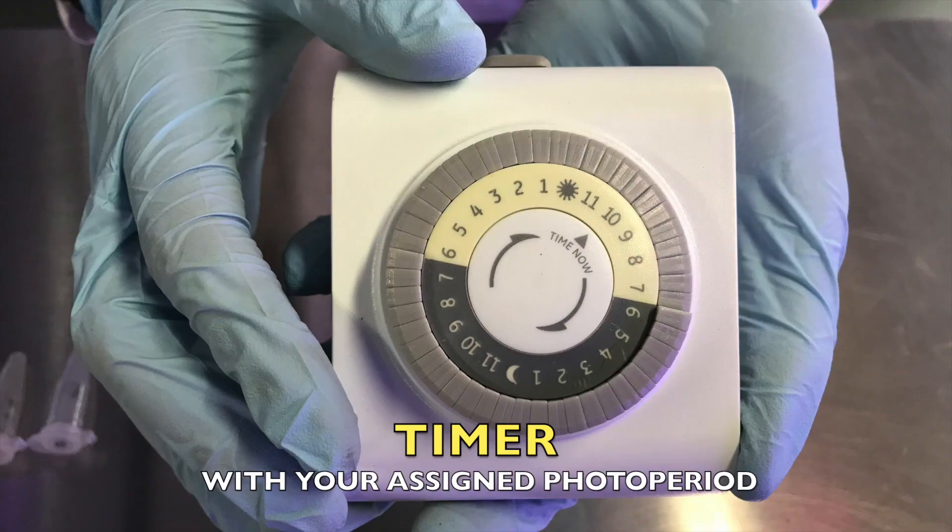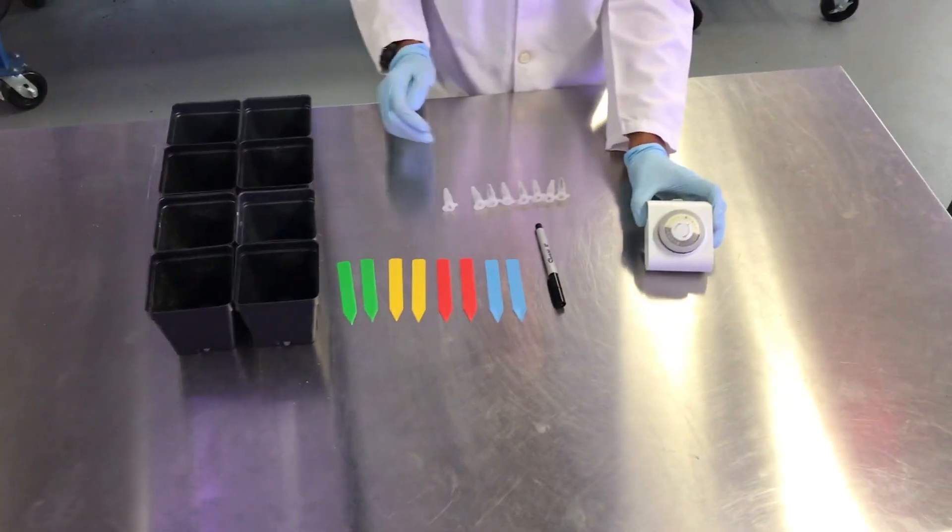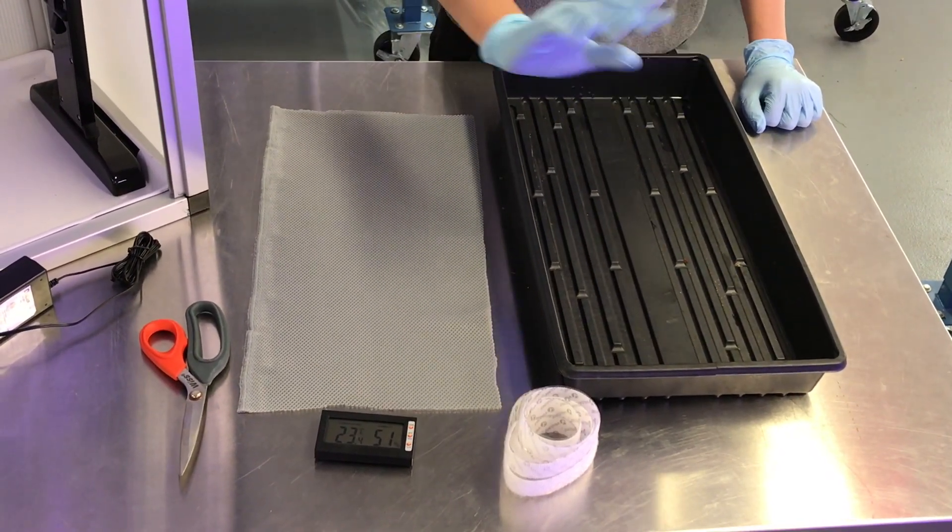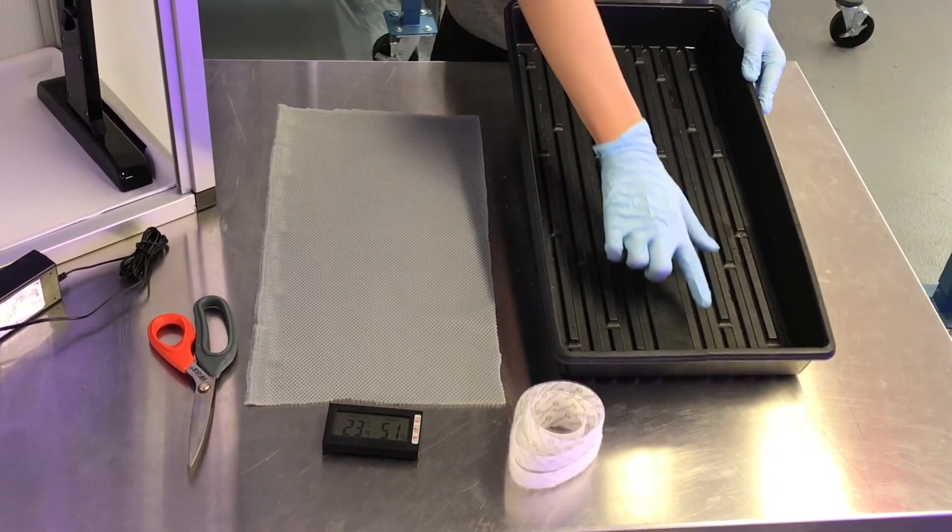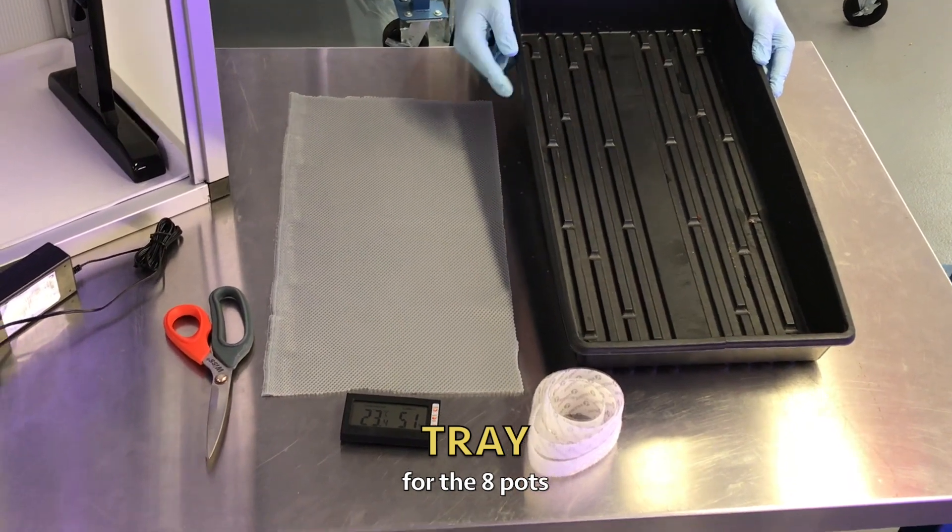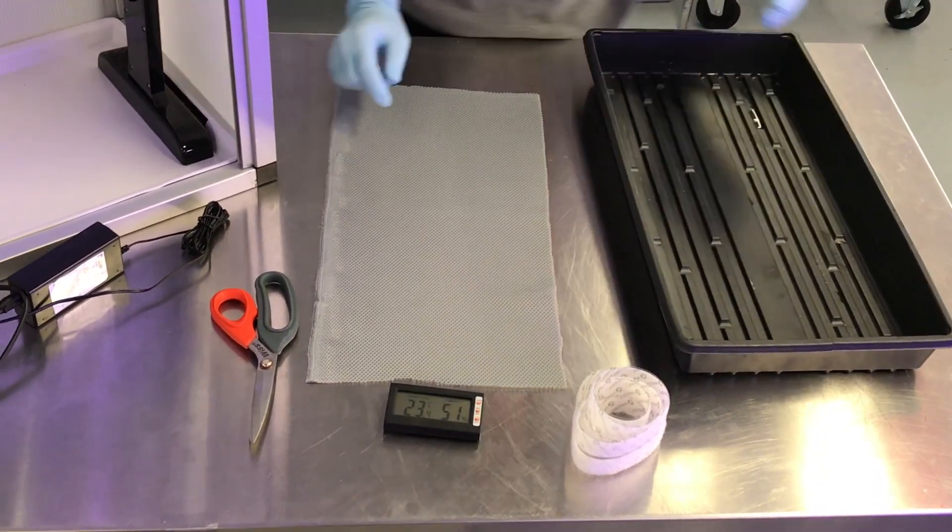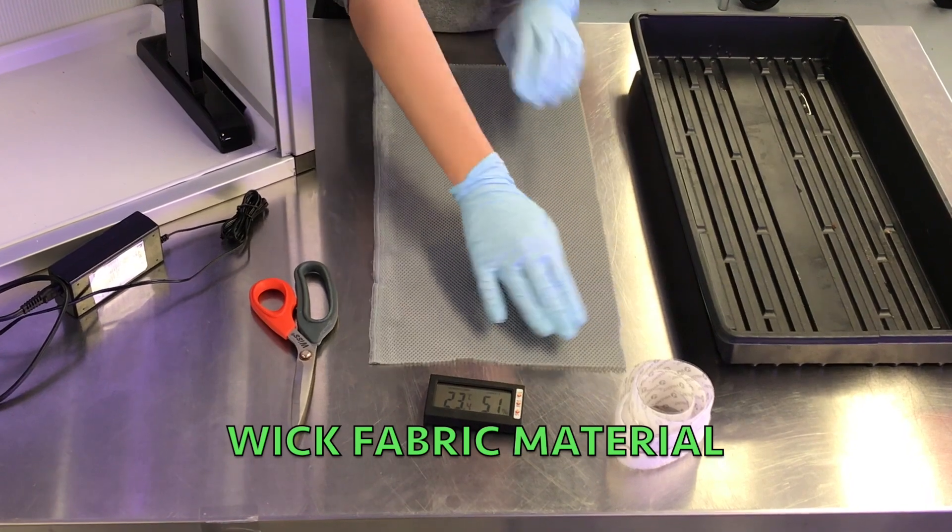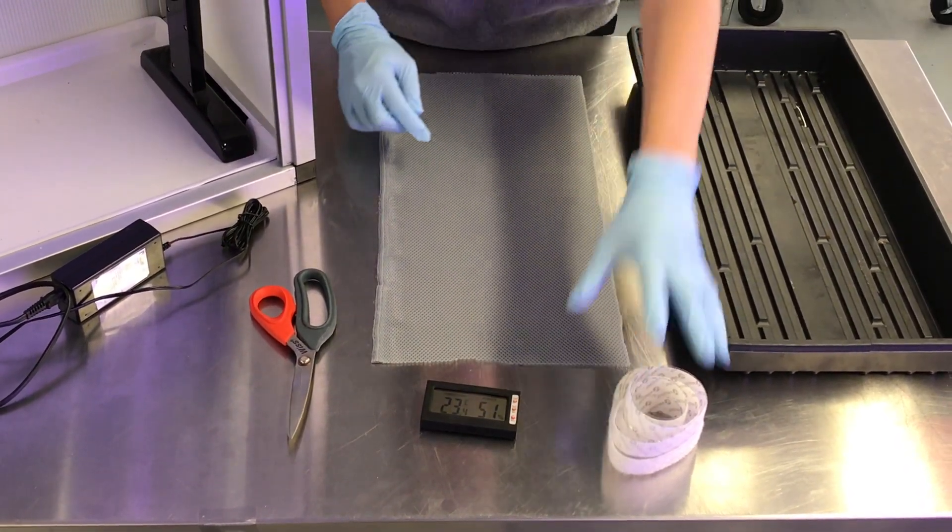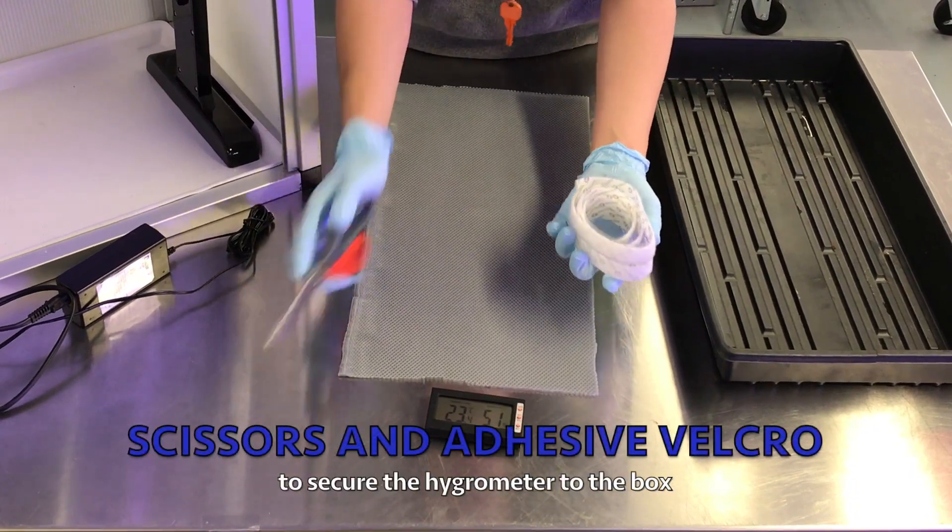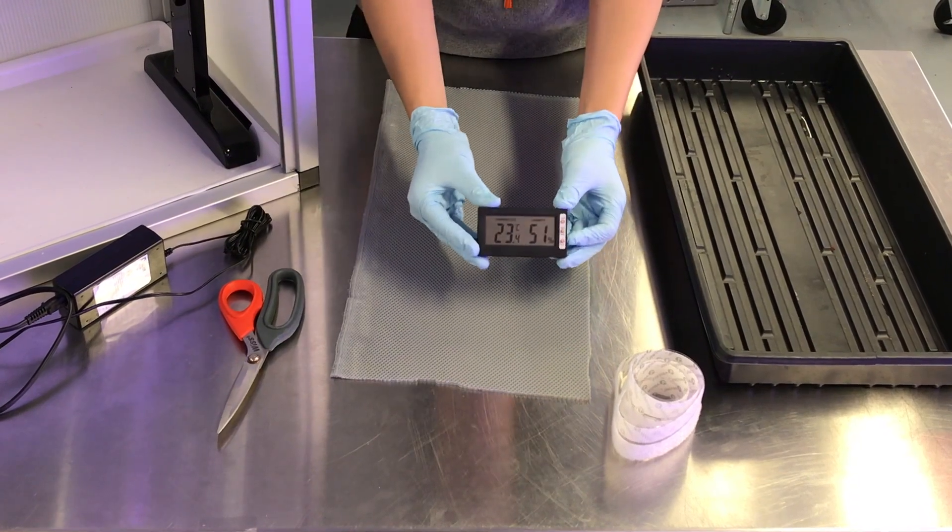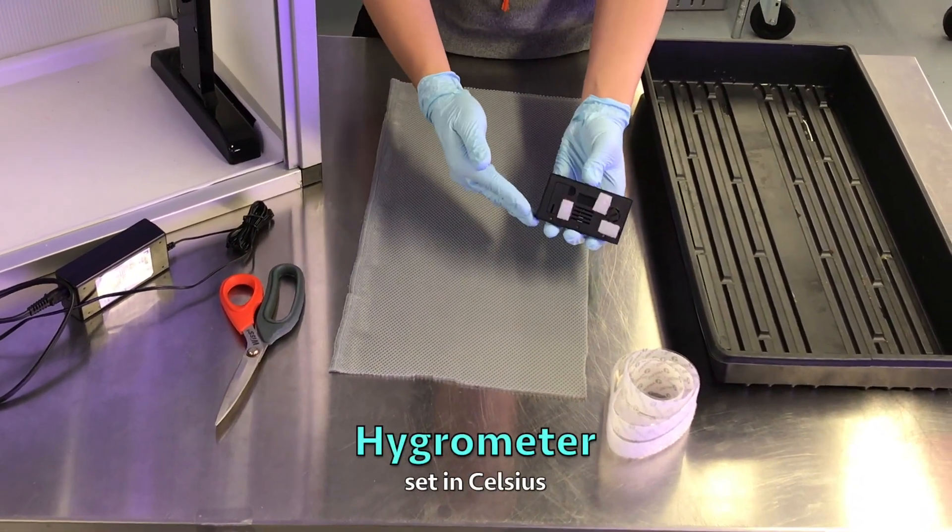These are the materials you will have for the box: a tray in which the fabric and pots will sit in, wick fabric material that will line the bottom of the tray with the perforated side facing up, a scissor, and some adhesive velcro to secure the hygrometer to the box.